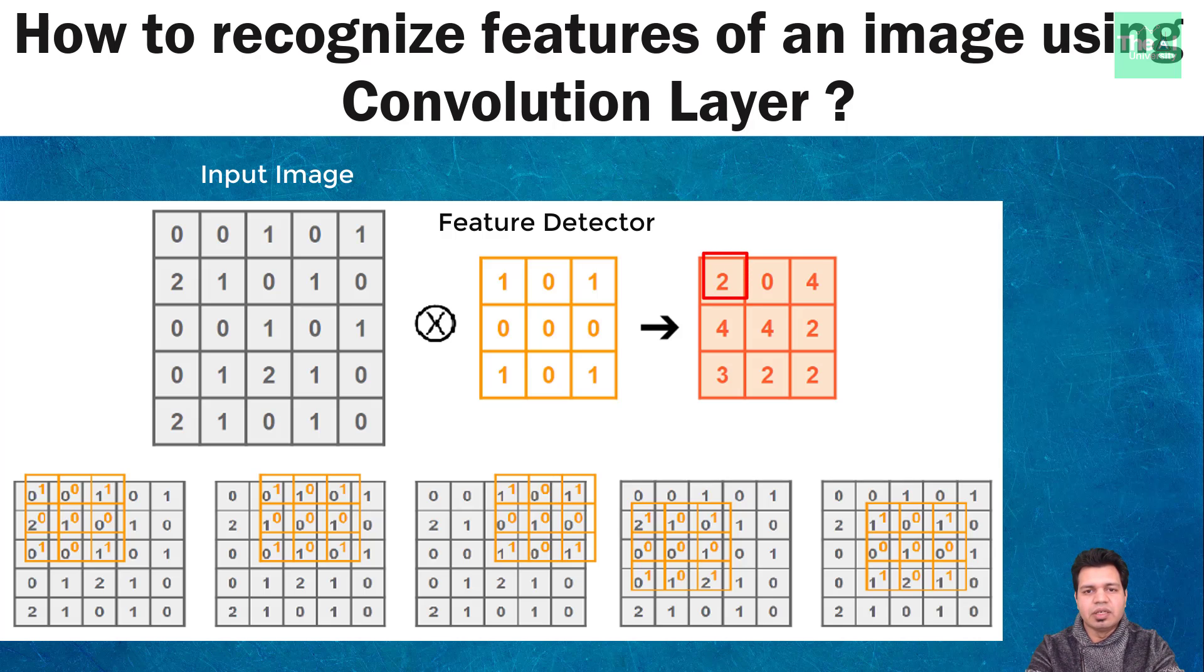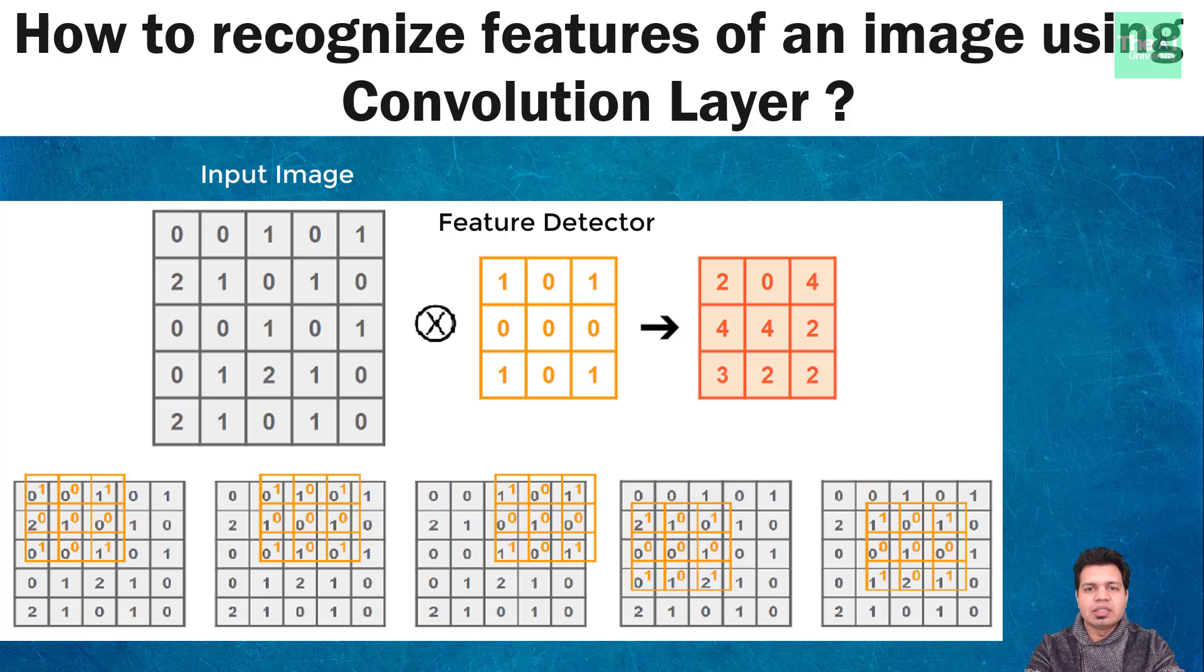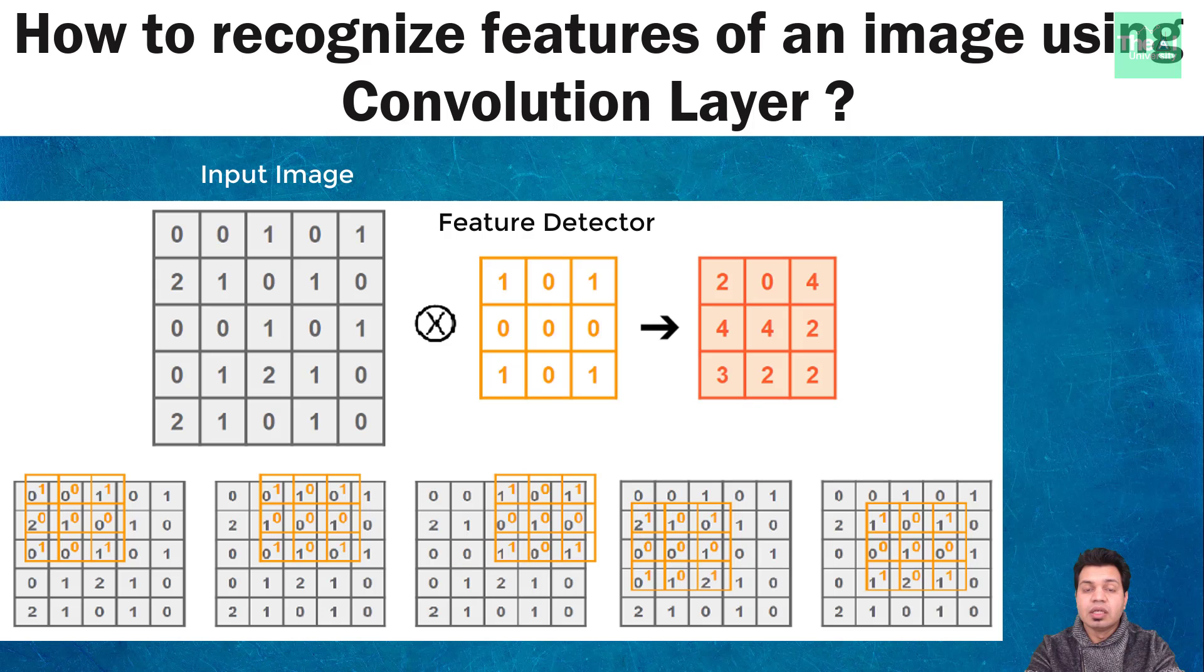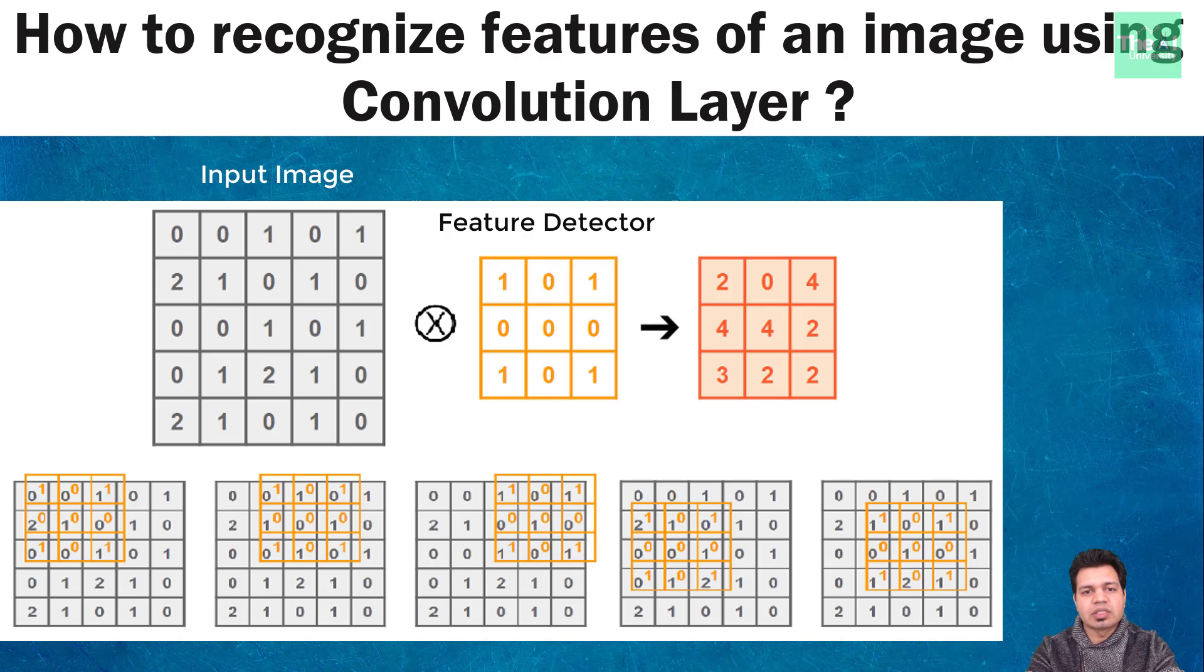After that you slide over next set of input data from left to right and perform element wise multiplication once again. Now the step at which we are moving this whole feature detector is called as stride. Here we have stride of one pixel but we can have a stride of two or three pixel as well and that depends upon our requirement.